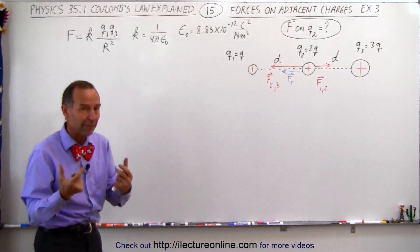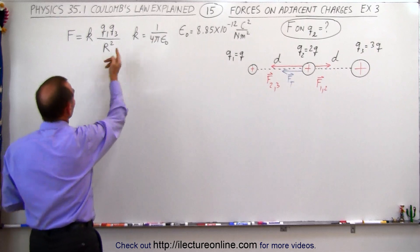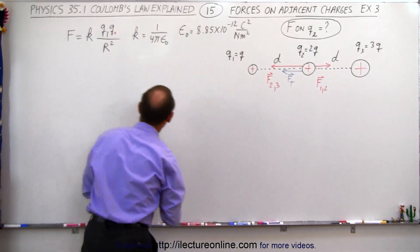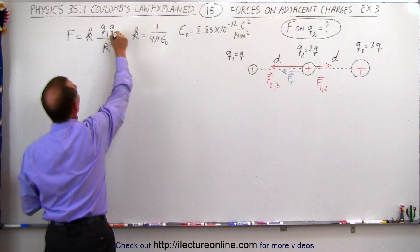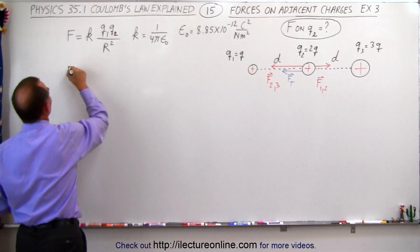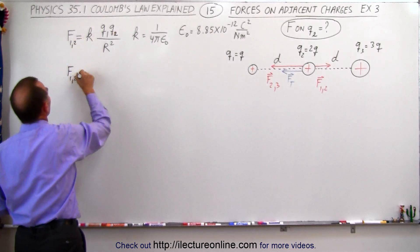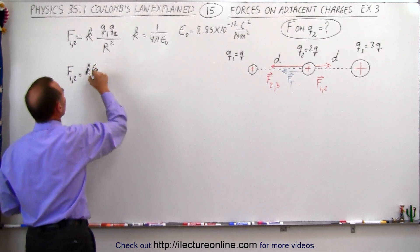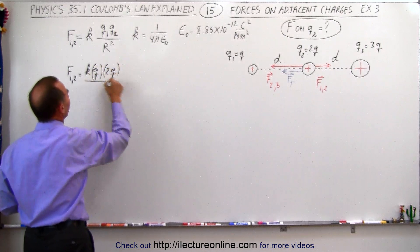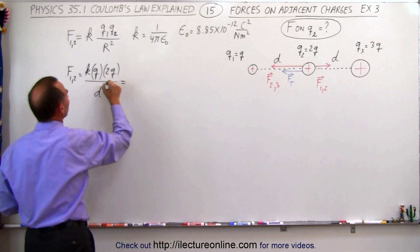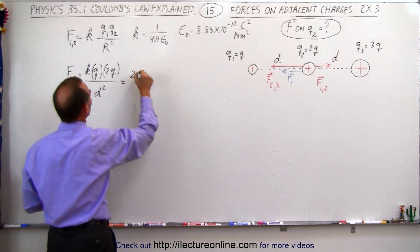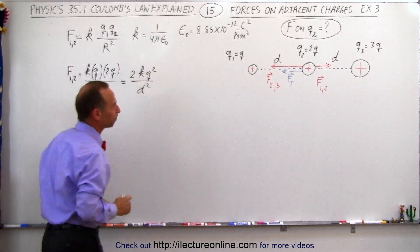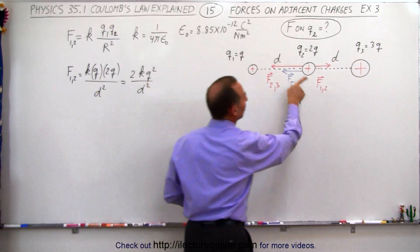Using Coulomb's law, we're going to find the magnitude of those two forces, starting with the force between 1 and 2. F between 1 and 2 is equal to K times Q1, which is Q, times Q2, which is 2Q, all divided by the distance between them squared, D squared. That gives us 2KQ² divided by D squared, and it'll be pointing to the right.